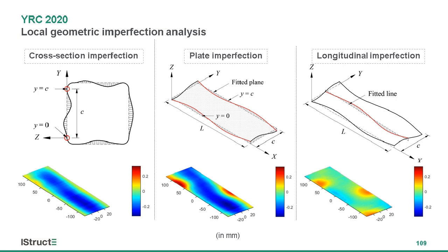The second method we call the plate imperfection. This is based on the assumption that the two edges of the flat region are straight. We fit a plane to the scanned data along the edges and take the deviation from this plane as the local imperfection. The third method is the longitudinal imperfection: we look at a series of longitudinal lines across the flat width, fit a straight line to the scanned data, and take the deviation from this straight line as the local imperfection.